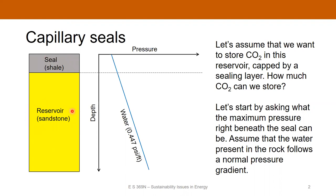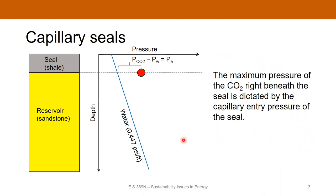The question is how much carbon dioxide can we actually store here and trap it by capillary mechanisms? We have to understand what the pressure profile is within the subsurface. Let's assume that the water phase is normally pressured, which means the water pressure just follows a hydrostatic gradient. For a typical subsurface brine, that's going to be about 0.447 psi per foot, neglecting water compressibility. We can just draw a straight line which shows us the water pressure with depth.